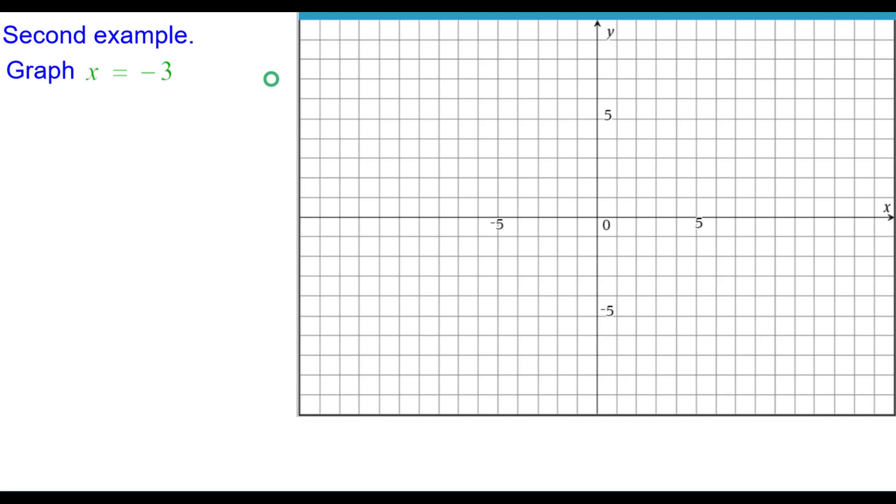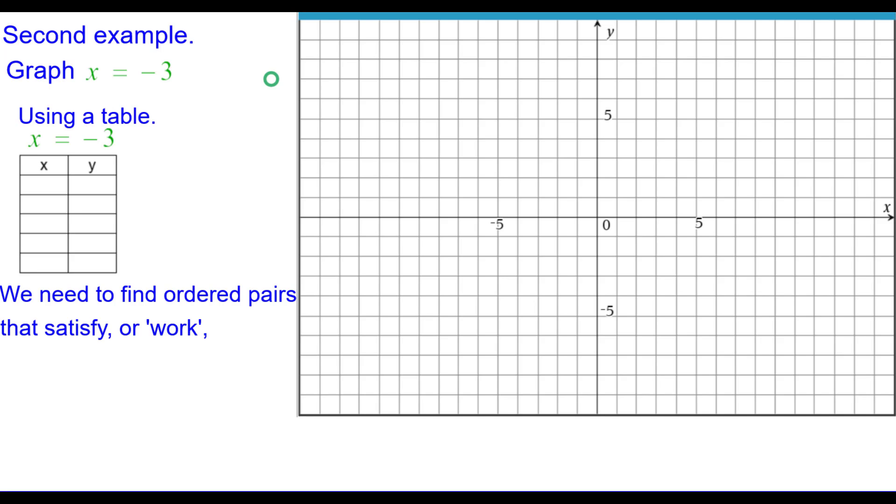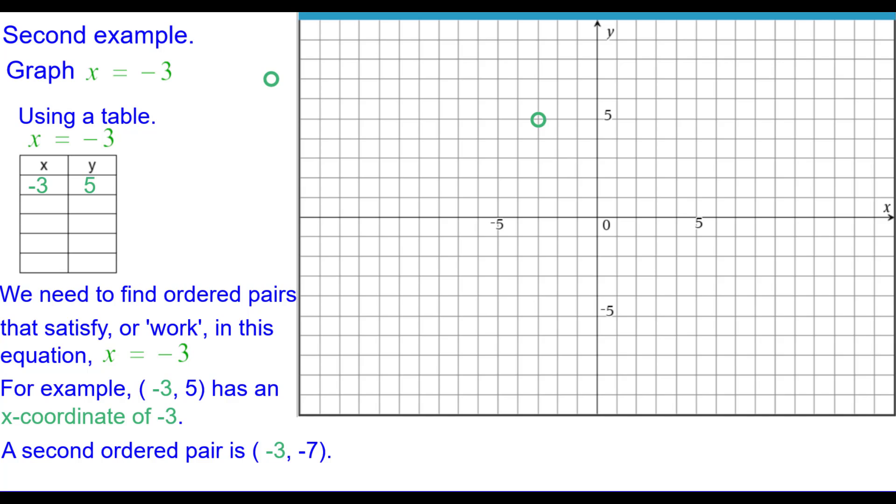Second example, graph x equals negative 3. Using a table again, we need to find ordered pairs that satisfy or work in this equation. One example would be negative 3 comma 5 because it has an x-coordinate of negative 3. So we'll plot negative 3 comma 5. A second ordered pair, negative 3 comma negative 7. So we'll go ahead and plot that one.